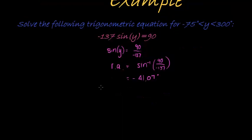Next step would be to find my general solution. My general solution for sine is the first quadrant reference angle, so in other words I'm calculating y is reference angle plus 360 times k.